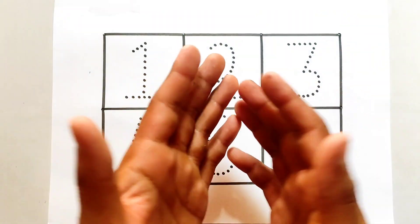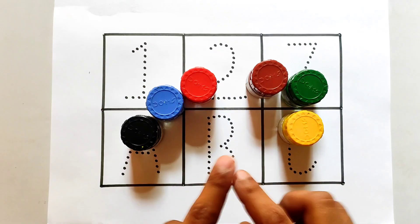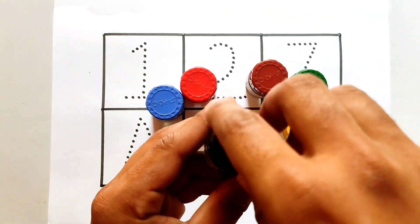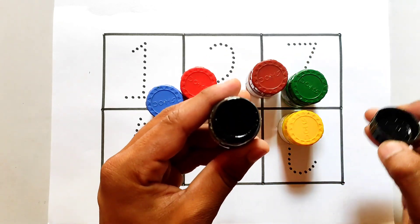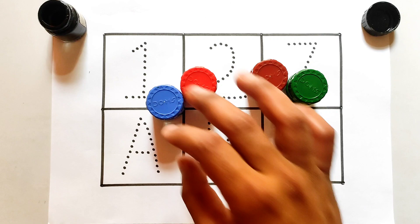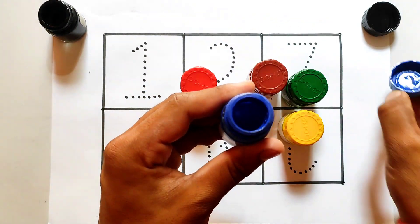Hello kids, welcome back to another video. Today we are going to learn numbers and alphabets by using these colors. So first of all, be aware of the color names. This is black color. Which color? Black color. This is blue color. Blue color.